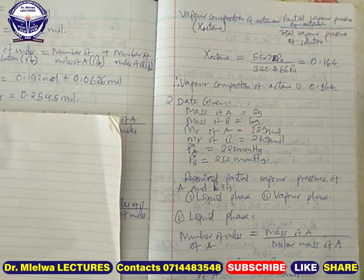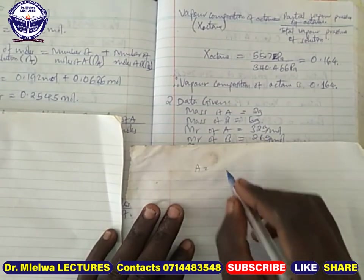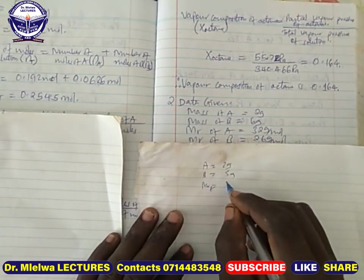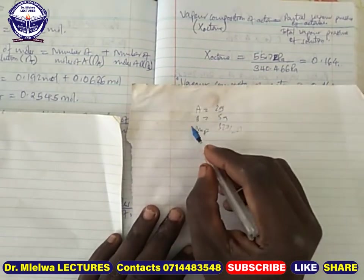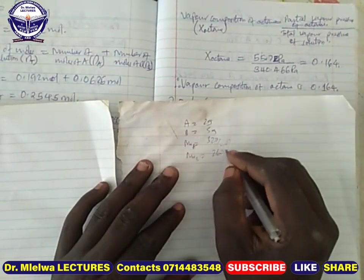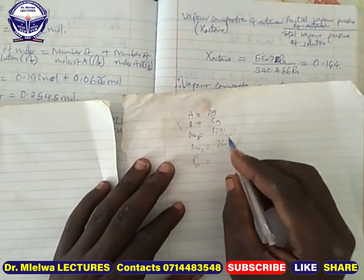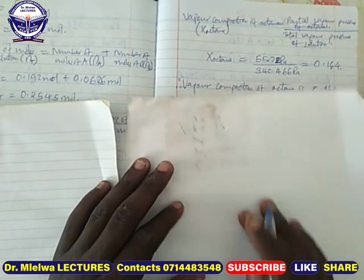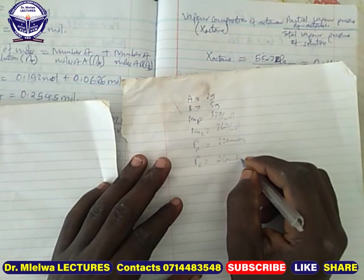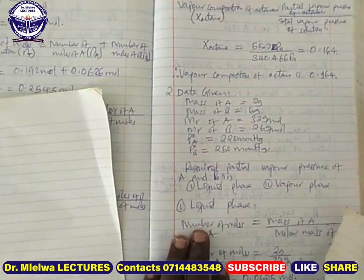In our second example, we are given the mass of a certain substance A — we are not told which substance A is. Mass of substance A is equal to 2 grams, and mass of B is equal to 5 grams. The molar mass of A is equal to 32 grams per mole, and molar mass of B is equal to 26 grams per mole. The pure partial pressure of A is 220 mmHg. The question requires us to calculate the partial vapor pressure of A and B in the liquid phase and in the vapor phase.